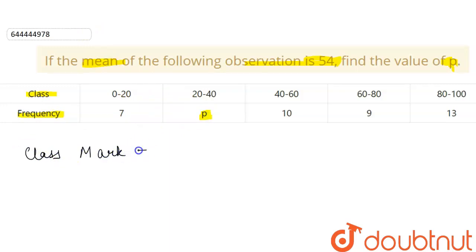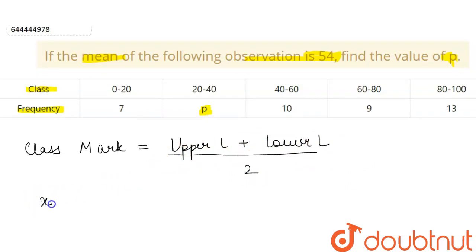Since we are given our table in intervals, we will have to find the class mark which is equal to the sum of upper limit and the lower limit divided by 2. We also know that the formula of mean is equal to summation of xi into fi divided by summation of fi.